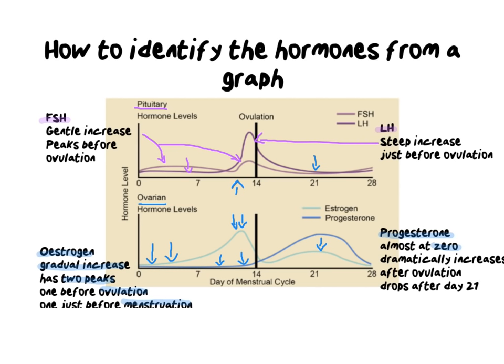At day 14, progesterone starts to make a very serious and dramatic increase. That's because progesterone is making the endometrium much thicker, glandular, and vascular — preparing for pregnancy. Then, around day 21, progesterone peaks along with estrogen, and then dramatically drops. When progesterone drops and estrogen drops, it signals to the body that we are not pregnant, so we can lose the endometrium lining and start the whole cycle again.